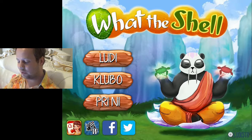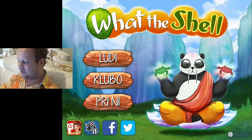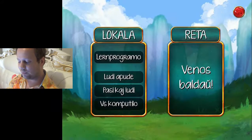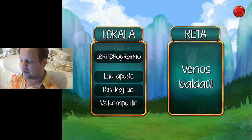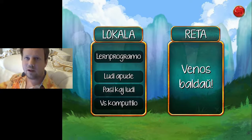So it's called What The Shell, and as you can see we've got three options down here: we've got 'ludi', 'clubbo', and 'pirini'. Ludi is 'to play', clubbo is like 'club', and pirini is 'about us'. As you can see there's no other settings on this front page, so you basically just go into play mode. What you've got is 'locala' and 'ereta' — locala is like 'local' and ereta is like 'internet', so network-based.